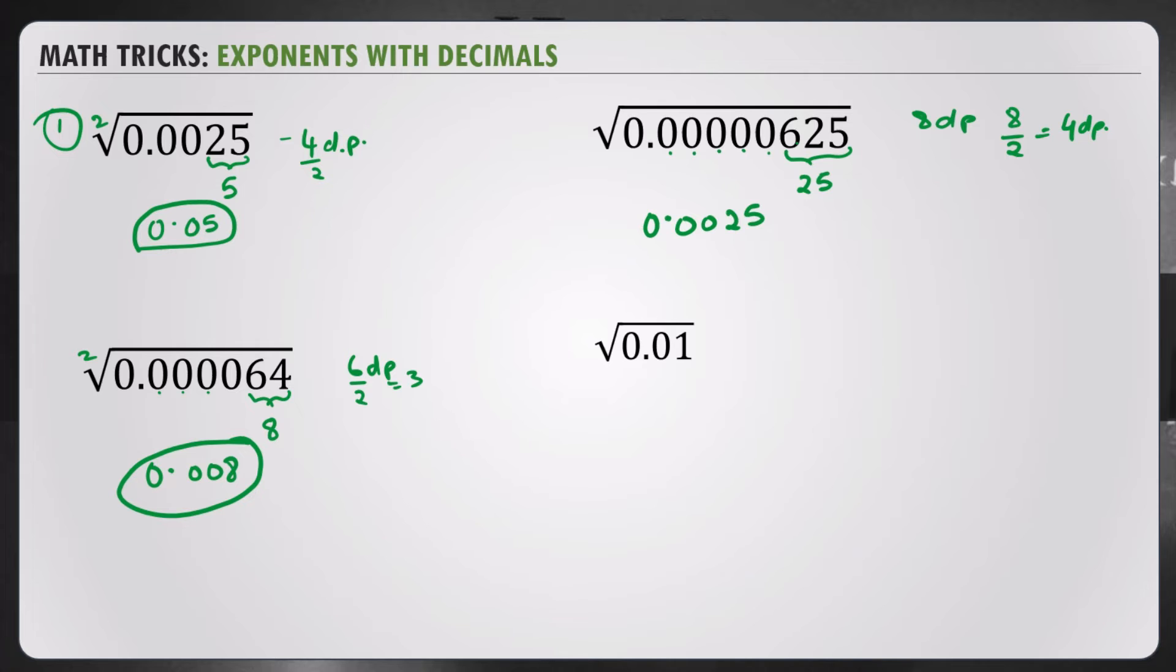Next, 0.01. Square root of 1 is 1. We have 2 decimal places divided by 2. The answer should have only 1 decimal place. So, the answer is 0.1. So, this was pretty simple.